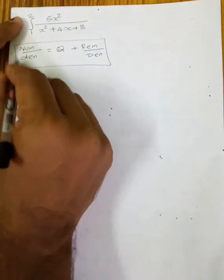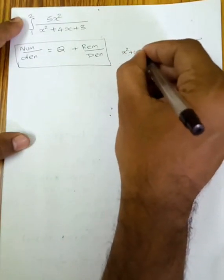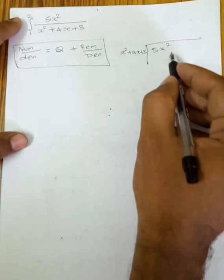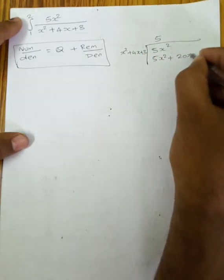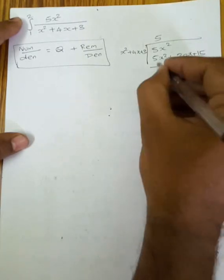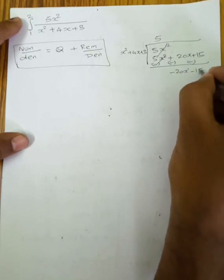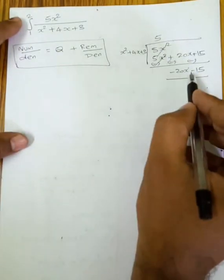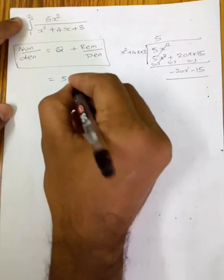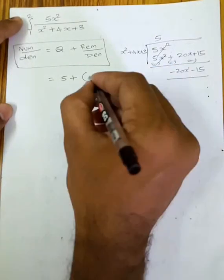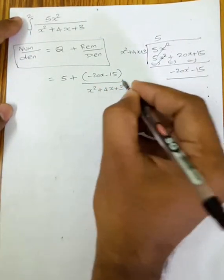Now divide 5x square by x square plus 4x plus 3. 5x square divided by x square gives quotient 5. Multiply: 5 into x square plus 4x plus 3 gives 5x square plus 20x plus 15. Subtracting, the remainder is minus 20x minus 15.